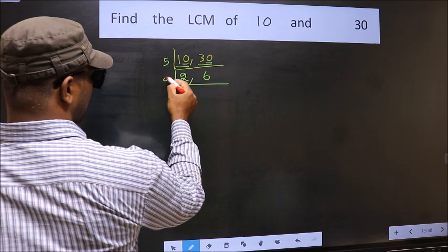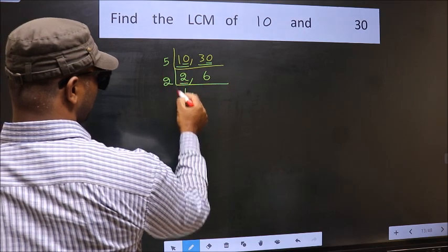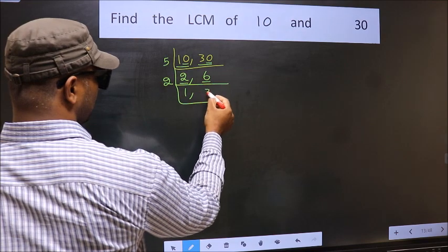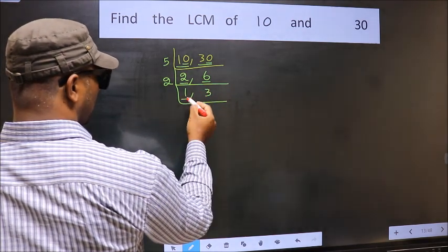Now here we have 2. 2 is a prime number. So 2 times 1 is 2. The other number 6. When do we get 6 in 2 table? 2 times 3 is 6. Now we got 1 here.